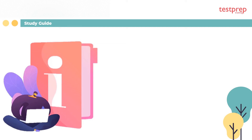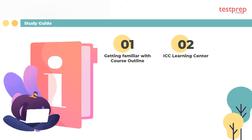Preparatory guide: One, get familiar with exam objectives — topics divided into sections and subsections with weightage percentages, helping candidates prepare sequentially. Two, ICC Learning Center — ICC Code Council offers training options to understand concepts and earn continuing education units, learning units, and professional development hours. Three, ICC Provider Program — provides training opportunities through various categories of ICC-approved education providers, accepting and promoting ICC-approved educational programs from a variety of providers.